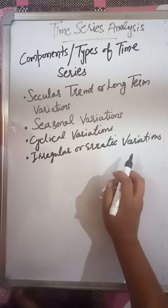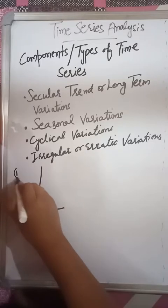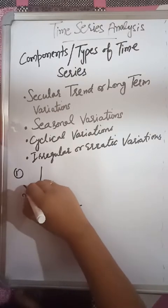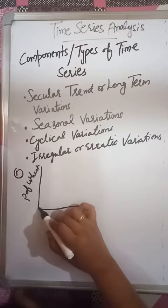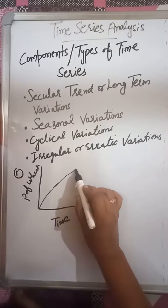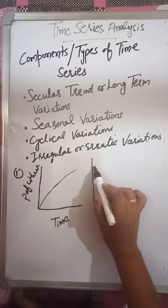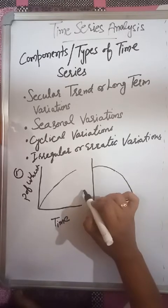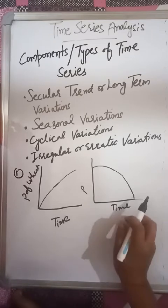Suppose we take 10 years of data, like wheat production. If we look at secular trend graphically, we plot time on the x-axis and production of wheat on the y-axis. Over 10 years, the wheat production graph may go upward, showing that production is increasing every year. Or the production may show a decreasing trend over time. So the main things are: a long time period, and gradual increase or gradual decrease. This is called long term variation or secular trend.